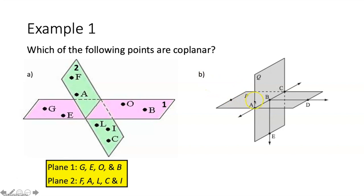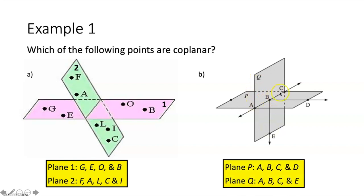Part B: we have plane P and plane Q. In plane P, points A, B, C, and D all exist. Points A, B, C, and E all exist within plane Q. Notice that points A, B, and C exist within both planes — and that's why when we name a plane, we can't pick three collinear points because they could technically exist within multiple planes. You need to pick three non-collinear points to describe a plane.